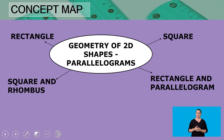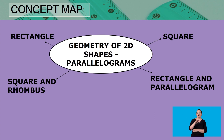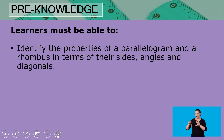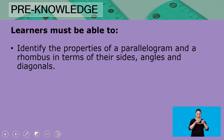Looking at the concept map for today's lesson, our focus is on parallelograms — that is a rectangle and a square. We are going to compare a rectangle and a parallelogram, and also a square and a rhombus. For this lesson, you must be able to identify the properties of a parallelogram and a rhombus in terms of their sides, angles and diagonals.